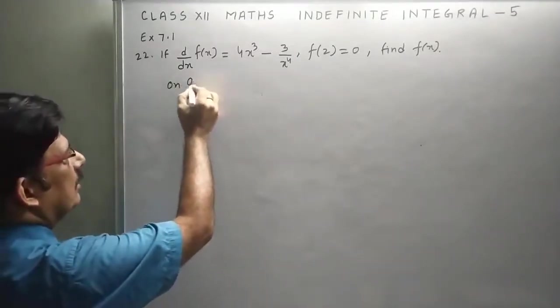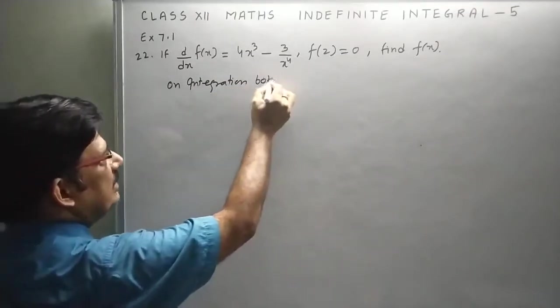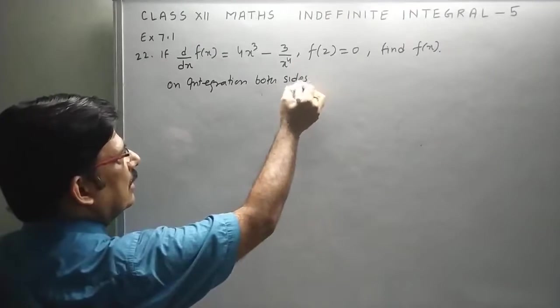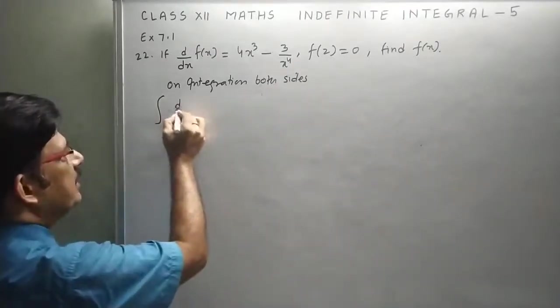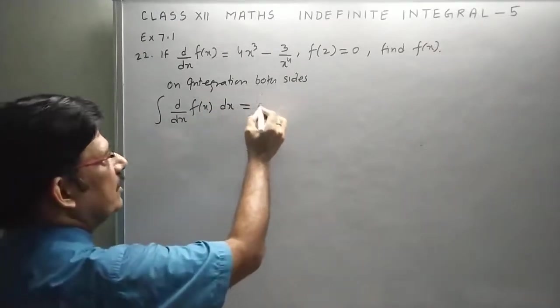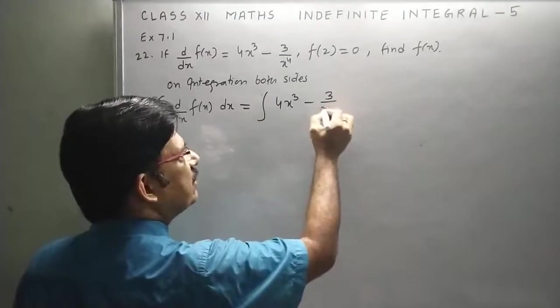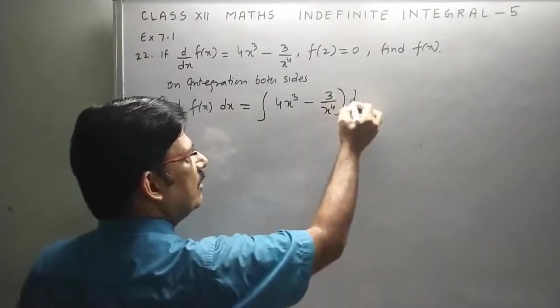On integration both sides, we have integration d/dx of f(x) dx is equal to integration of 4x³ minus 3 upon x to the power 4 dx.